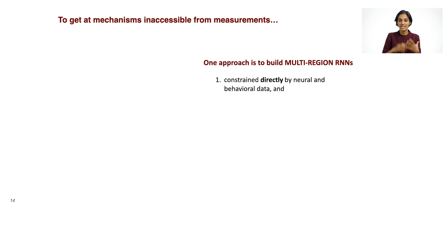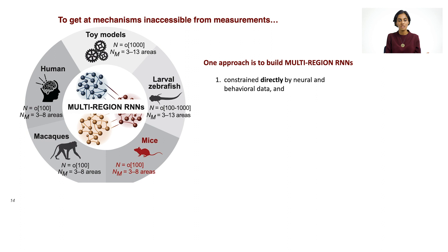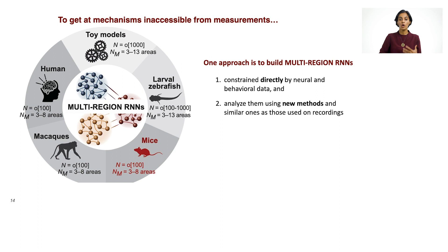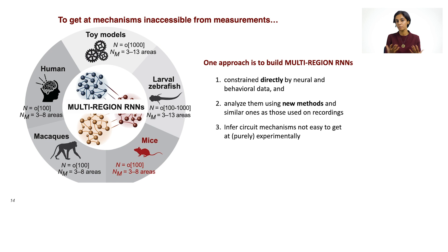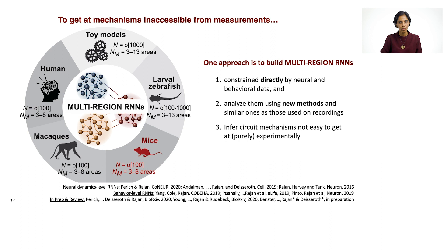These multi-region RNN models will be built exactly as described before, except the target functions for training will come from idealized ground-truth toy models, or from smaller brains where we have more access — such as a larval zebrafish system — or from mice, behaving macaques, or humans. After building and training these models to match data from different nervous systems, we'll analyze them using different methods, some specially developed for this purpose. We will be able to infer circuit mechanisms that are impossible to get at through measurements alone. In my lab, we've been working on these approaches quite extensively.